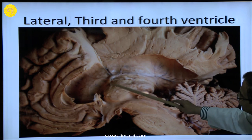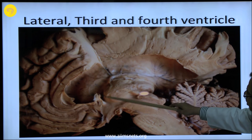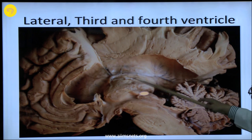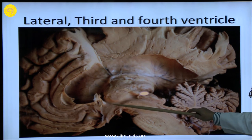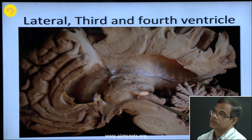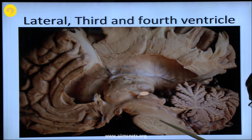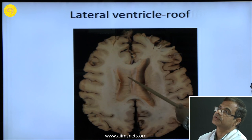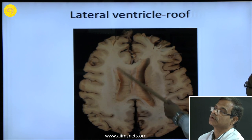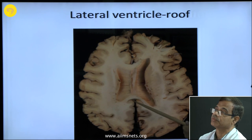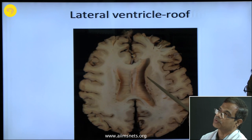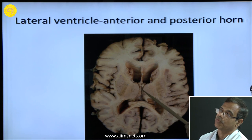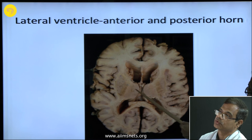The thalamostriate vein at the interventricular foramen will join the choroidal vein to form the internal cerebral vein, and that will form — below the splenium of the corpus callosum — the great cerebral vein. Here is the hypothalamic sulcus which is continuous with the cerebral aqueduct and the fourth ventricle. This is the roof of the lateral ventricle. The corpus callosum is here and you can see the anterior horn. This is the genu of the corpus callosum with the forceps minor fibres, and some part of the body of the caudate nucleus has come. Here is the roof of the third ventricle which is formed by the body of the fornix and the two thalami.